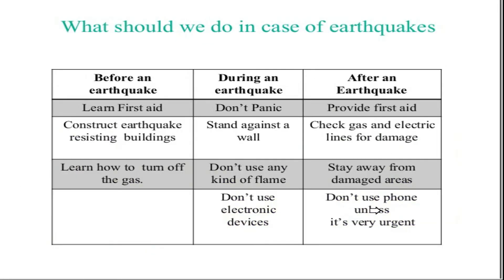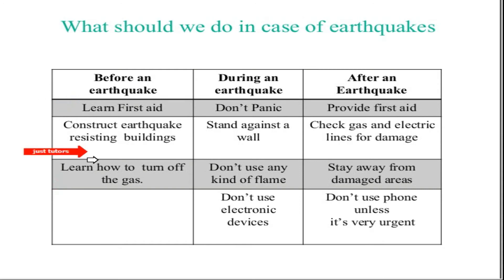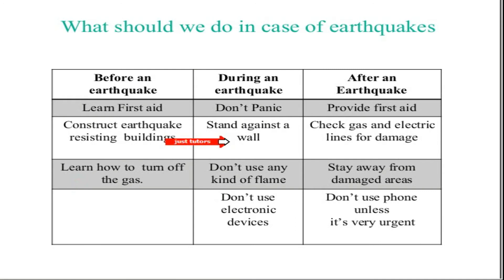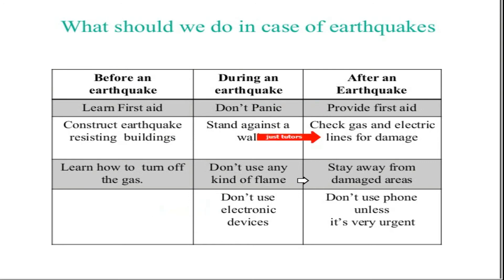We have a table with a brief idea about what should be done before, during, and after an earthquake. Before an earthquake: know first aid, construct earthquake-resistant buildings, and learn how to turn off the gas. During an earthquake: don't panic, stand against a wall, don't use any flame, and don't use electronic devices. After an earthquake: provide first aid, check gas and electric lines for damage, stay away from damaged areas, and don't use the phone unless very urgent.